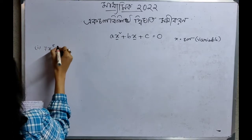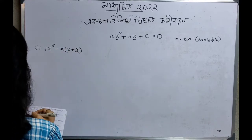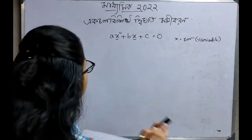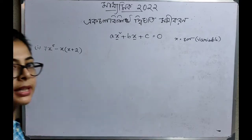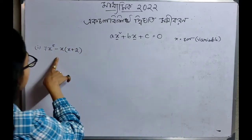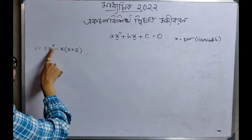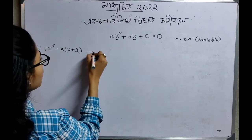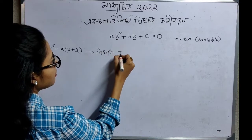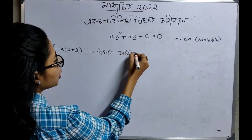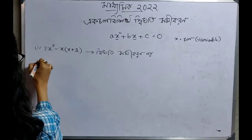The next question is: 7x to the power 5 minus x into x plus 2 — is this a quadratic equation? To check, we look at the highest power of x. Here the power is 5, so this will not be a quadratic equation.